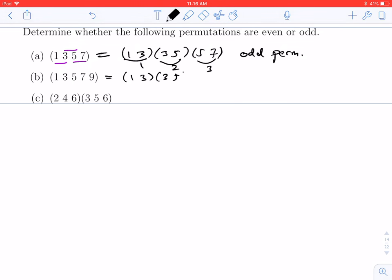Again, we can break this up: (1 3)(3 5)(5 7)(7 9). There are 1, 2, 3, 4 permutations. 4 is even, so this is an even permutation.